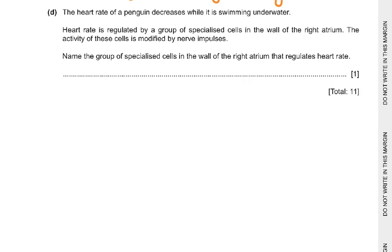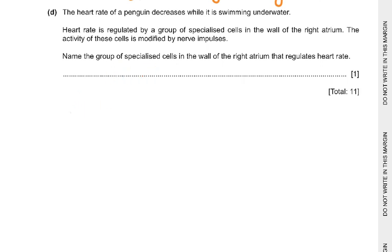Part D: The heart rate of a penguin decreases while it swims underwater. Heart rate is regulated by a group of specialized cells in the wall of the right atrium, whose activity is modified by nerve impulses. Name this group of cells: the Sino-atrial node. The abbreviation SA node is not allowed as it is not a standard abbreviation — write the full term.